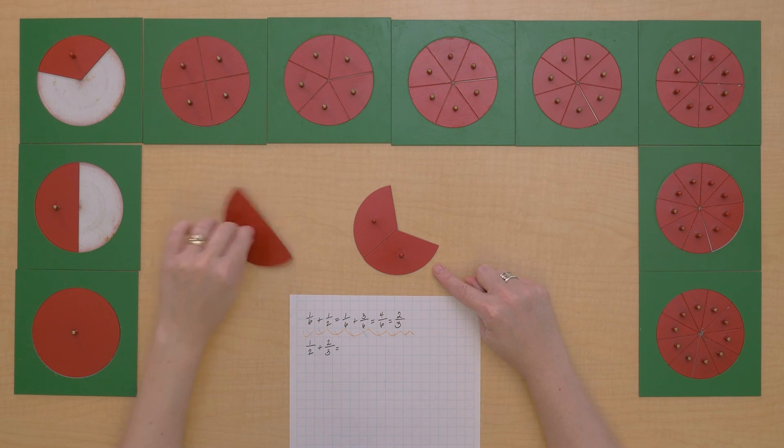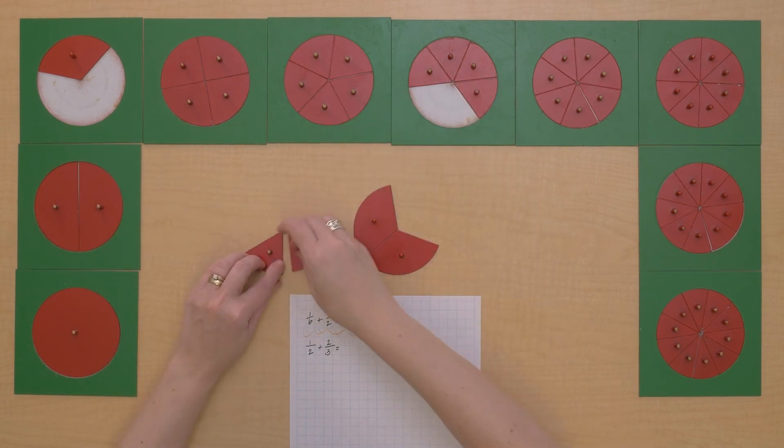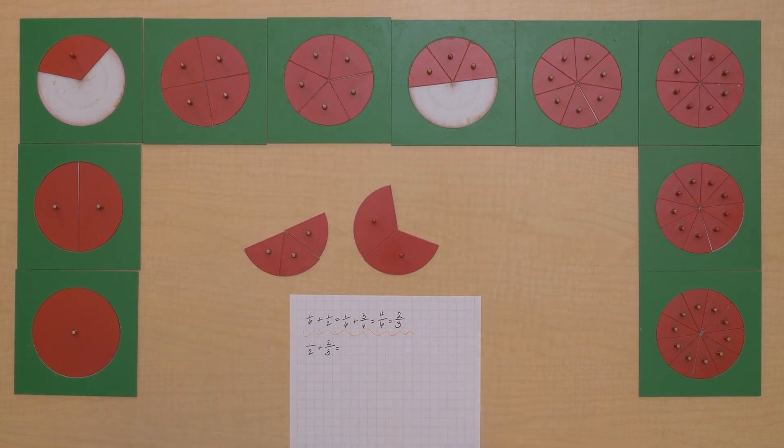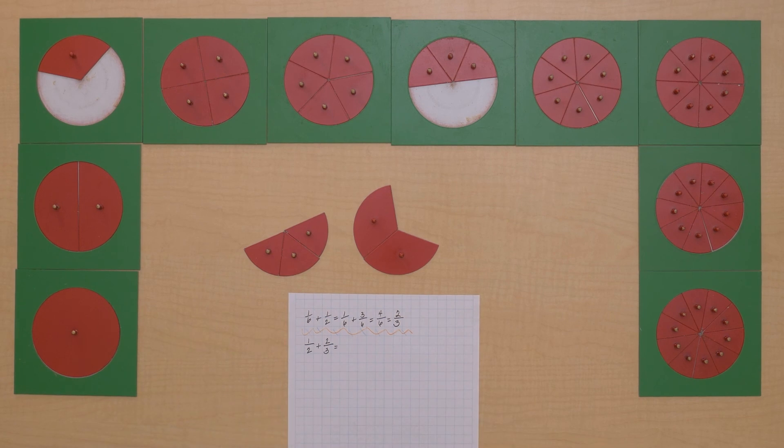One-half equals three-sixths. So we can exchange. Two-thirds equals four-sixths. So we're going to need our extra fraction pieces.